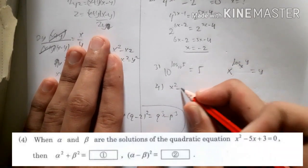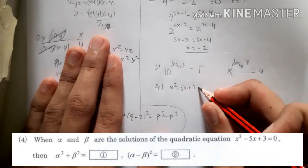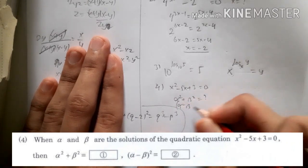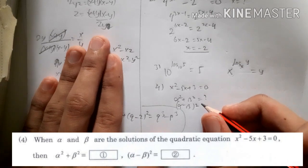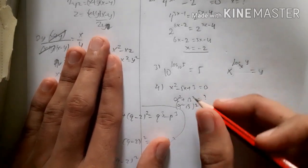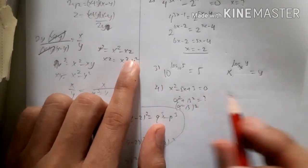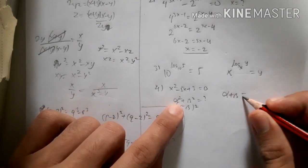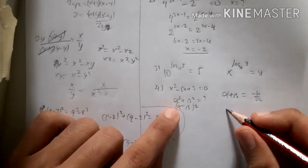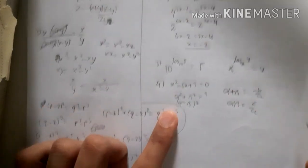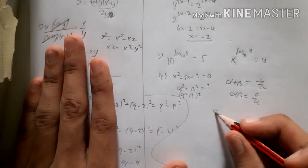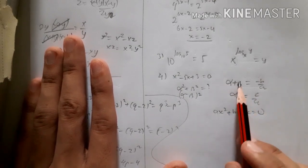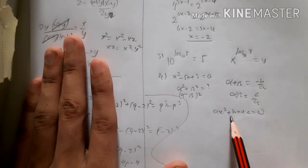Number 4: given the quadratic equation x squared minus 5x plus 3 equals 0, find alpha squared plus beta squared and alpha minus beta squared, where alpha and beta are the roots. Remember, for a general quadratic equation, the sum of the roots alpha plus beta equals negative b over a, and the product alpha times beta equals c over a.